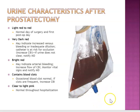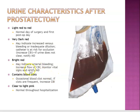Regarding urine characteristics: light red to dark red is normal on the first day after surgery, but you don't want blood clots. Very dark red indicates increased venous bleeding or inadequate dilution — the catheter risks occlusion, so increase the flow rate on the stopper. Bright red may indicate arterial bleeding — increase CBI flow, monitor vitals, and notify the MD immediately. An occasional blood clot is normal; if clots are large, increase the CBI rate. Clear to light pink is the goal.